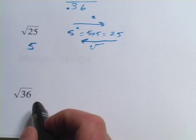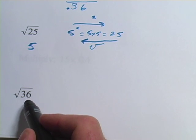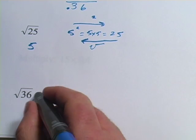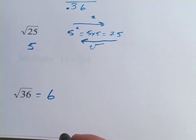Same thing for square root of 36. You have to ask yourself what times itself equals 36. And hopefully if your multiplication facts come back to you, you'll remember 6 times 6 is 36. So the square root of 36 is 6. So that's a little bit about squares and square roots.